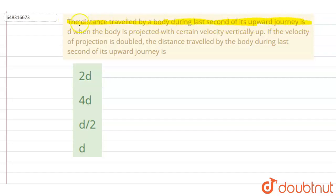Hello everyone. The distance traveled by a body during last second of its upward motion is d when the body is projected with certain velocity vertically upward. If the velocity of the projection is doubled, the distance traveled by the body during last second of its upward journey is: